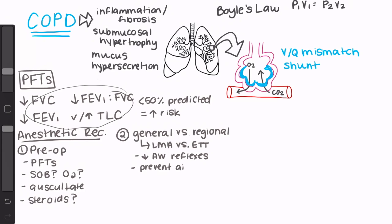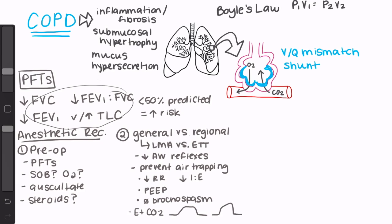Another big thing to think about if you choose general anesthesia for your patient with COPD is this population's expiratory flow limitation and their propensity to air trap. This is further exacerbated with positive pressure ventilation. You'll often hear this referred to as dynamic hyperinflation or auto-PEEP. This dynamic hyperinflation of the lungs can result in volutrauma, hypotension from decreased venous return, hemodynamic instability, hypercapnia, and acidosis. Some ways to mitigate this issue include allowing sufficient expiratory time by decreasing respiratory rate and/or decreasing your I-to-E ratio, using extrinsic PEEP, and aggressively preventing and treating bronchospasm. Make sure you're also keeping an eye on your end-tidal CO2 tracing. The more obstruction to airflow your patient has, the less plateau your curve will have. The shark fin-looking tracing can be a clue for both bronchospasm and air trapping.